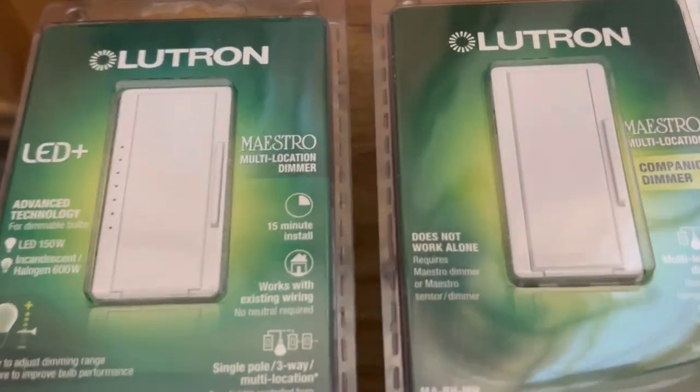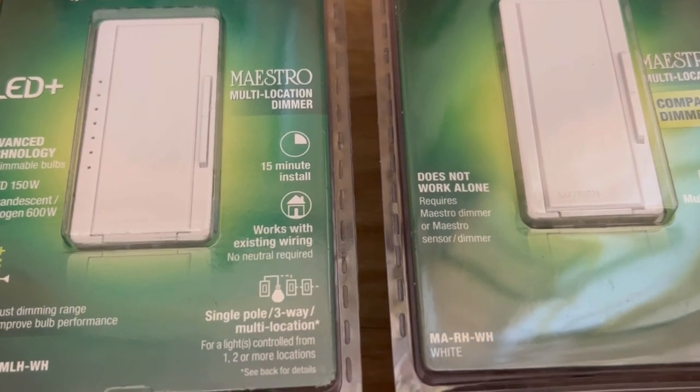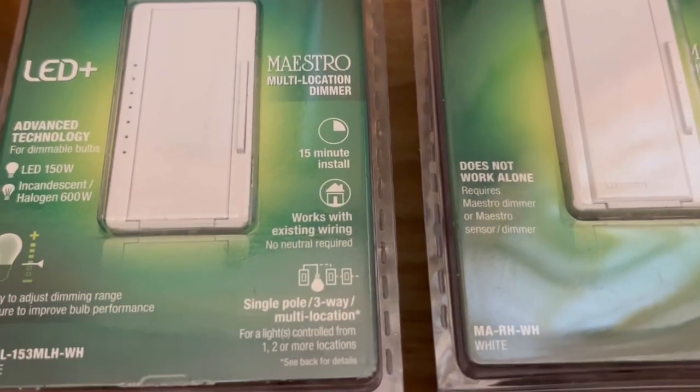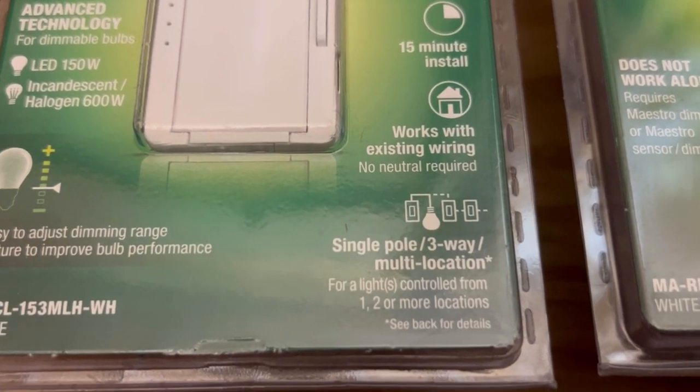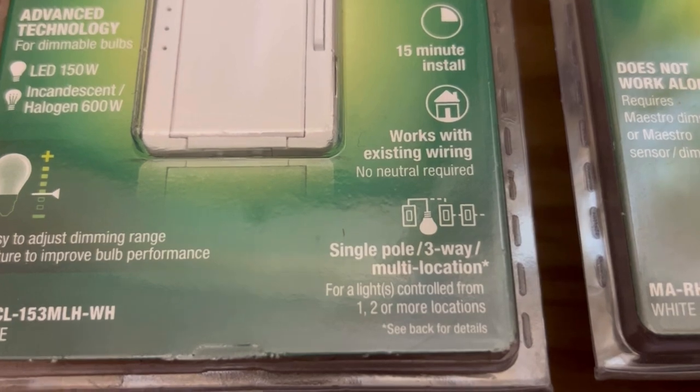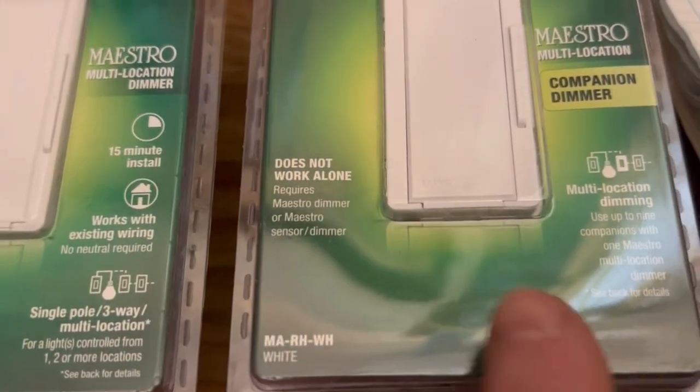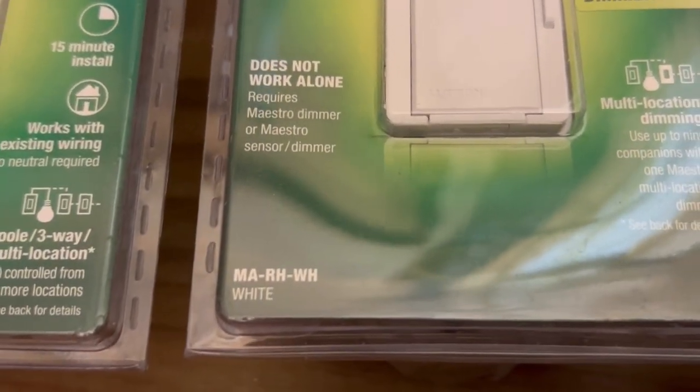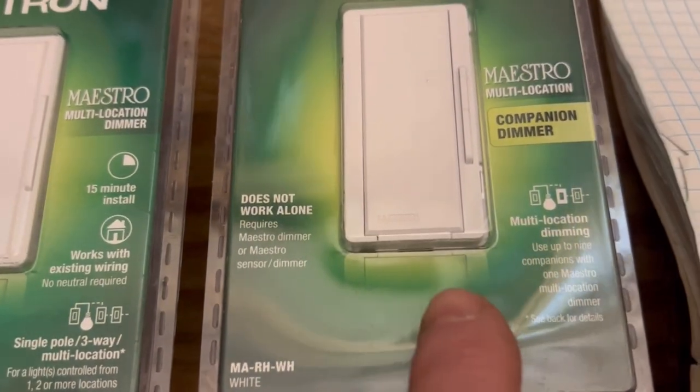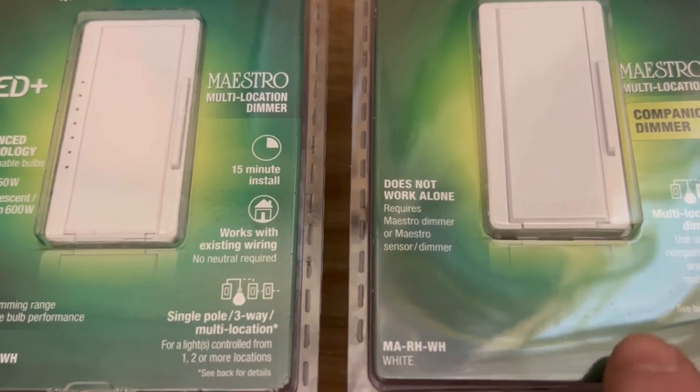So I bought some Lutron digital LED dimmer switches. There's the model number MACL-153MLH-WH - that's the main dimmer switch, and this is a companion dimmer switch, model number MARH-WH. Note that this guy does not work alone, it's kind of like a master-slave type of setup. They have a pretty nice diagram here.